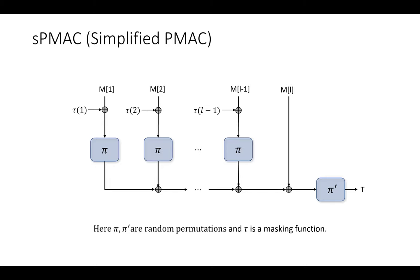Now, this is the pictorial view of the simplified PMAC or SPMAC. Here the message blocks are XORed with the tau outputs — tau outputs are just the masking values. So the i-th message block is XORed with the i-th masking value and it is fed into the block cipher, the permutation pi. After we collect all the outputs of these block ciphers, we XOR them and the last block is also XORed here and this is fed into the last block cipher pi prime and we get the tag output. Pi and pi prime are random permutations here and tau is the masking function.